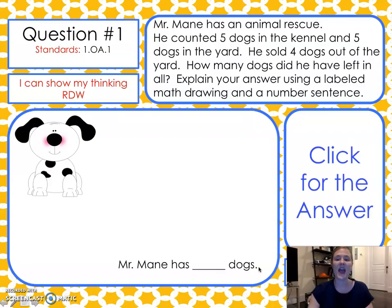Mr. Main has an animal rescue. He counted five dogs in the kennel and five dogs in the yard. He sold four dogs out of the yard. How many dogs did he have left in all? Explain your answer using a labeled math drawing and a number sentence.